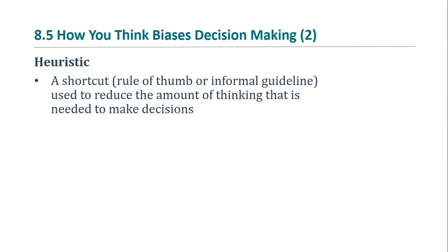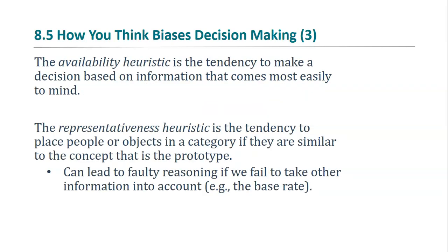Much of the time we use heuristics, or rules of thumb, to make everyday decisions, and much of the time that's effective. However, there are some built-in biases in these heuristics. The availability heuristic is our tendency to make a decision based on how easily we can think of an example of that event. For example, are you more likely to be killed by a shark or struck by lightning twice? Are tornadoes or asthma more likely to kill you? Are words beginning with K or words with K as the third letter more common? In each case, the second alternative is more common, though we often think the first is because it's easier to think of examples of it.